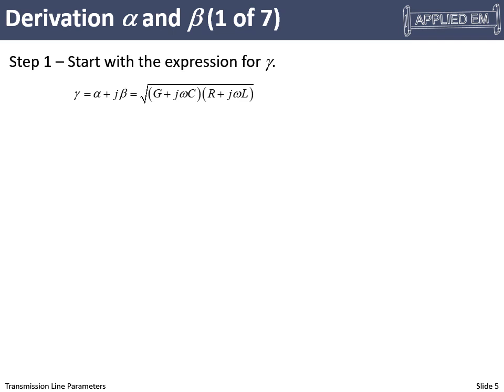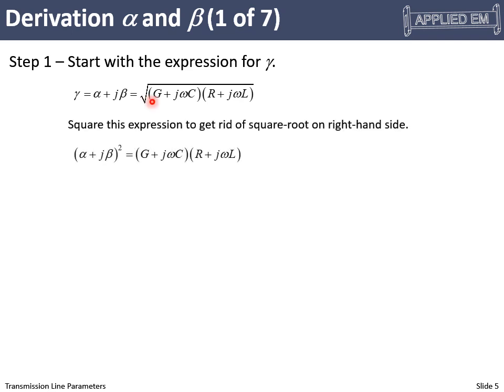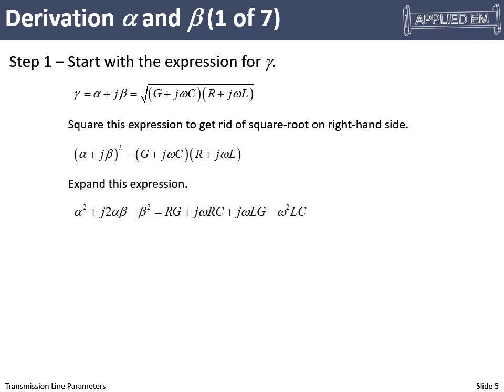When we were deriving the wave equation for transmission lines, we defined the complex propagation constant gamma, which we knew was the attenuation coefficient plus j times the phase constant. This expression with our fundamental parameters fell out of the derivation for the wave equation. To get rid of the square root, we square both sides of this equation, so we end up with (α + jβ)² and eliminate the square root on the right.